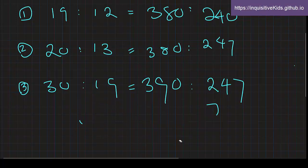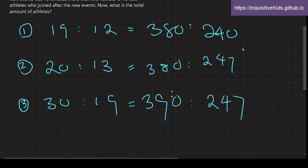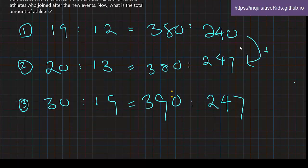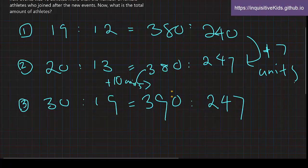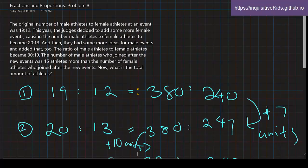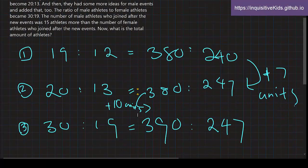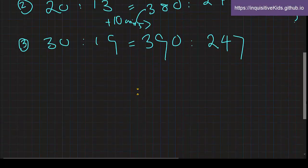So here are our three new ratios. And we know that from here to here, we added 7 units, right? And from here to here, we added 10 units. So we know that the difference between these two additions was 15 people, 15 athletes.